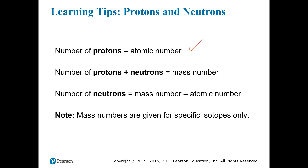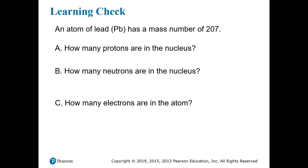To summarize: the number of protons equals the atomic number. The mass number is the number of protons plus the number of neutrons. That means if we know the mass number and the atomic number, we can calculate the number of neutrons by rearranging that equation. Mass numbers are given for specific isotopes only. Isotopes are atoms of the same element — so they have the same number of protons — but they have different mass numbers, meaning different numbers of neutrons. Not every atom of hydrogen has the same number of neutrons, so different atoms of hydrogen can have different mass numbers.